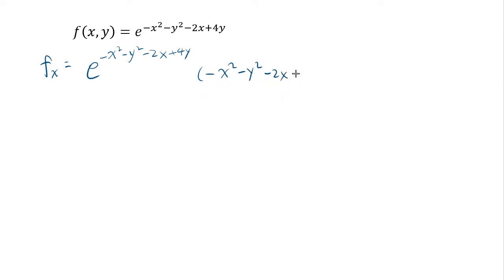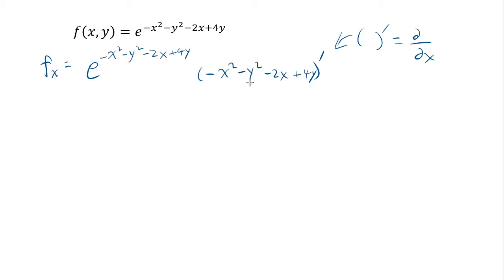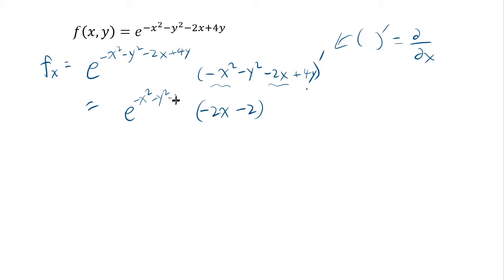This is the nested function — you have to differentiate it. This derivative means differentiate by x, treating y as a constant. So negative y² and 4y are constant terms; constant terms give you 0 when you differentiate. You only have to differentiate the x terms, so you get (−2x − 2) · e^(−x² − y² − 2x + 4y). That's our f_x.